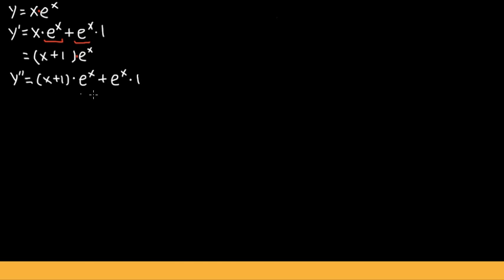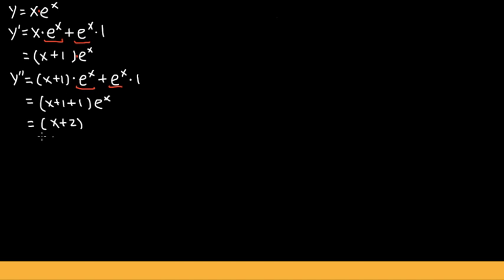Then we add the second function, which is e to the x, times the derivative of the first. The derivative of x plus one is just one. So both terms have e to the x in common, and we factor it out again. We open the parentheses and put e to the x at the end, throwing in x plus one and then adding one. So we end up with x plus two times e to the x — that's the second derivative.